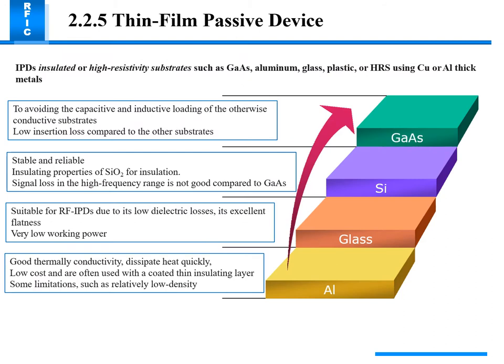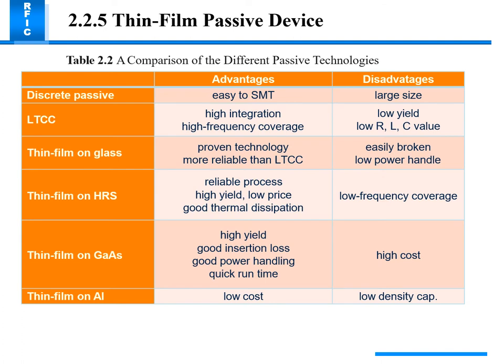IPD on insulated high-resistivity substrates such as gallium arsenide, aluminum, glass, plastic, or HRS uses copper or aluminum thick material. Silicon dioxide is used for insulation because it is stable and reliable. RF IPD benefits from low dielectric losses, excellent flatness, good surface thermal conductivity for quick heat dissipation, and low cost. These properties make silicon dioxide and gallium arsenide widely used for most devices.